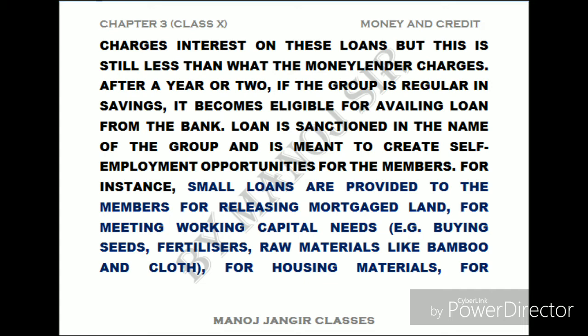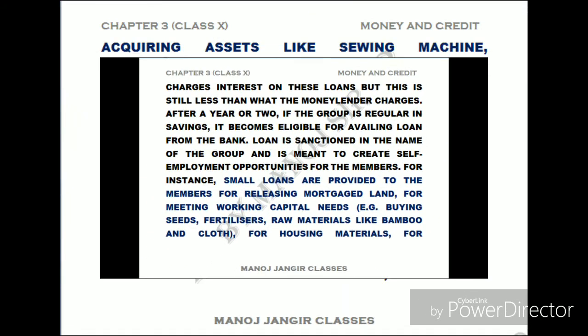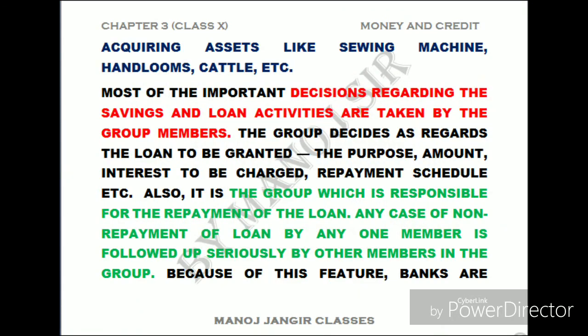Small loans are provided to members for various purposes: for releasing mortgaged land, for meeting working capital needs, for small farming-related needs such as buying seeds, fertilizers, raw materials, bamboo, and clothes, and for housing materials and acquiring assets like sewing machines, handlooms, and cattle. All these needs can be met through the small loans provided by the self-help group.